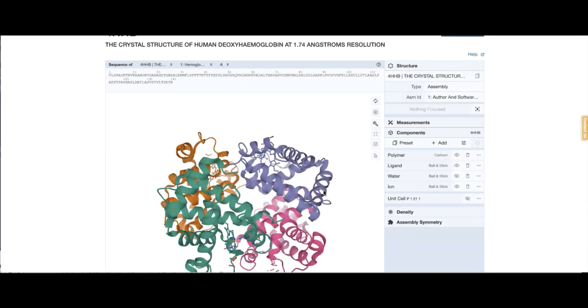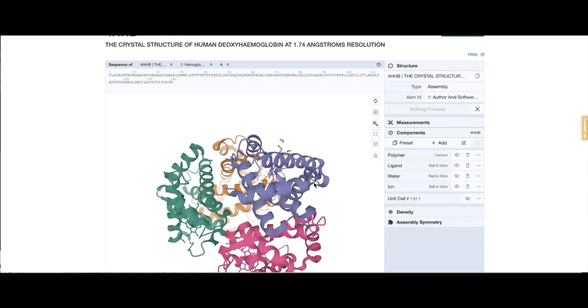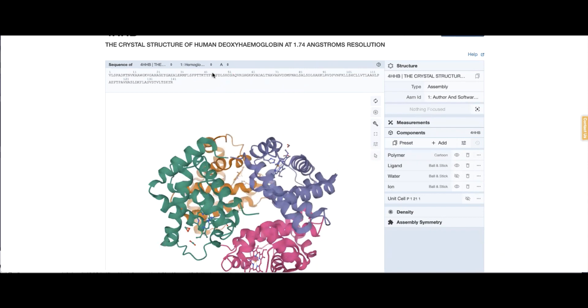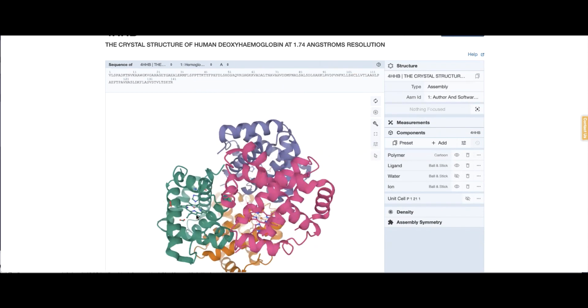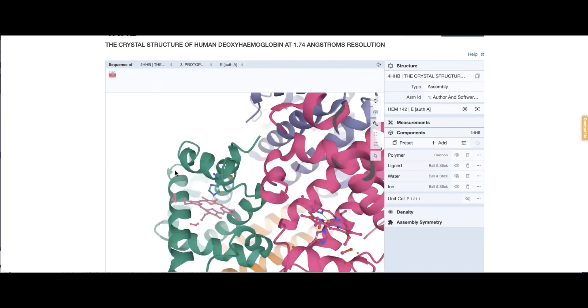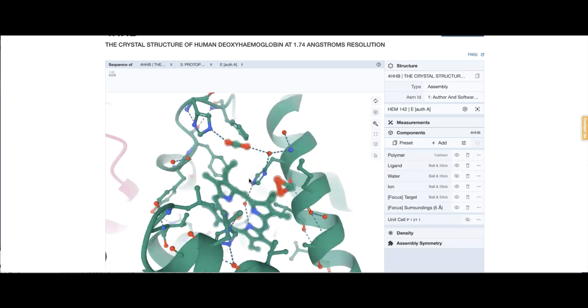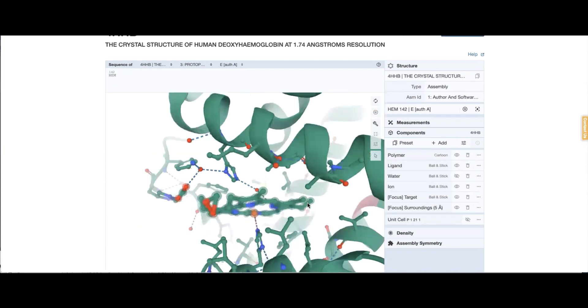So we are trying to investigate the heme group bound to chain A, the heme group here. I could just click on this, or I could find the heme groups here. They are A, B, C, D. Four heme groups are here. So I'm selecting chain A. And if I click on that, I get to explore the environment around the heme.